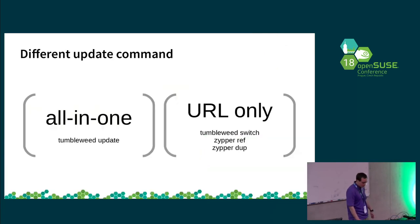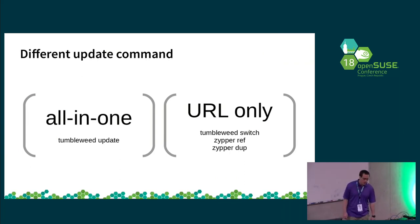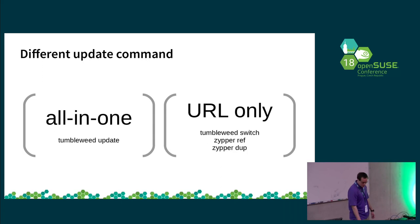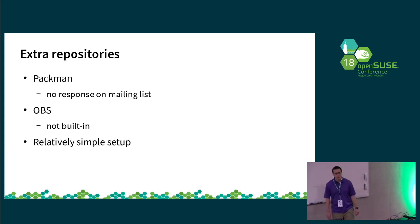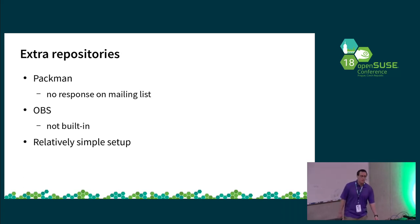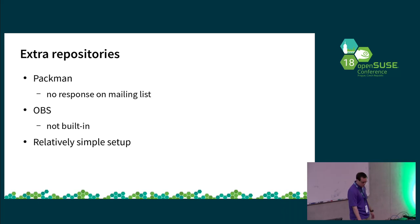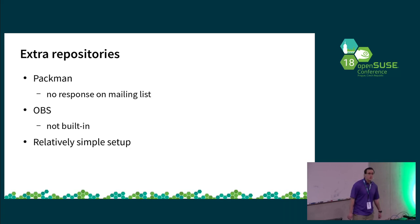One thing to remember after you do that is that updating is a bit different — you can either use the all-in-one Tumbleweed update command, which runs switch and then runs a refresh and dup for you. If you're using a Packman repository or develop projects or things like that, those are not snapshotted. So if you decide you want to update to a month-old snapshot and you have Packman and you're running dup at the same time, you may have issues. Generally, if you are using Packman, you need to update to a relatively recent snapshot if you're actually going to update that as well. Setting up snapshotting for something like that should be relatively simple if we wanted to do so, and even easier if it was built into OBS.